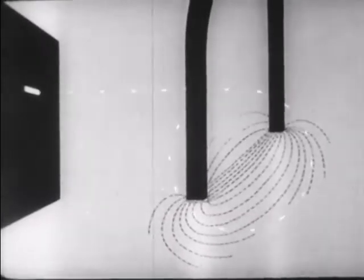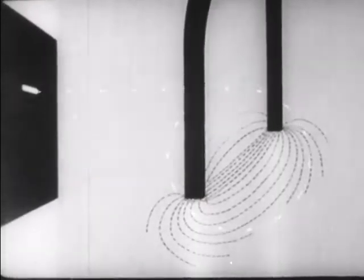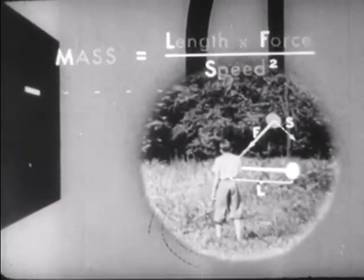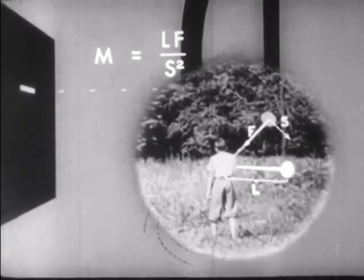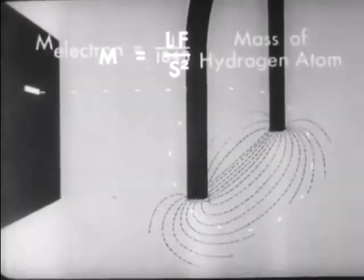These unit charges, which we call electrons, can even be swung around in circles by a suitable magnetic field. This offers a method of determining their mass — just as we can determine the mass of a stone at the end of a swinging rope if we know the length of the rope, the speed of the stone, and the force the stone exerts upon the rope. So is it possible to determine the mass of these electrons. This mass has been found to be one one-thousand-eight-hundred-forty-fifth of the mass of a hydrogen atom.